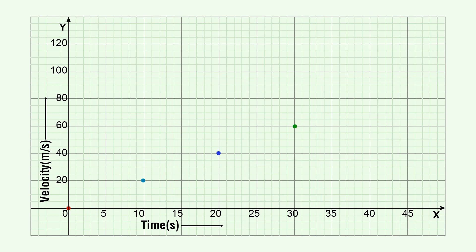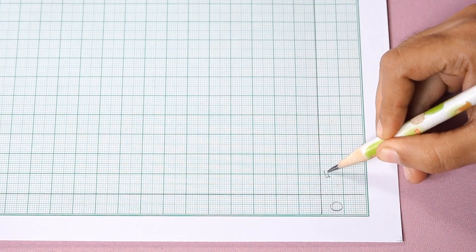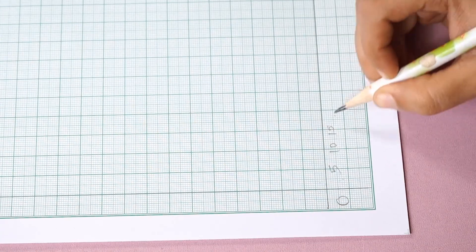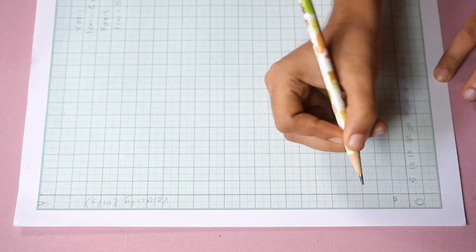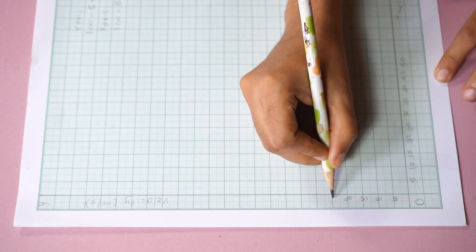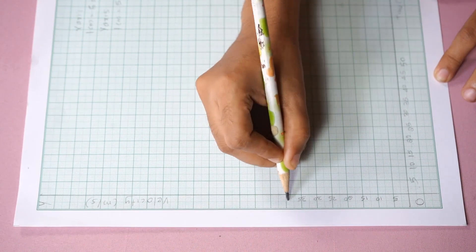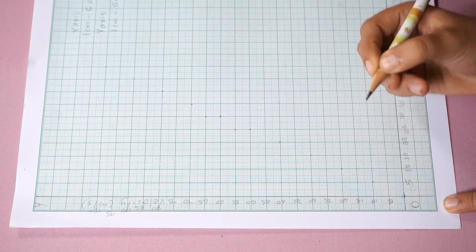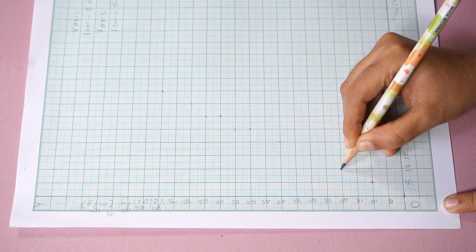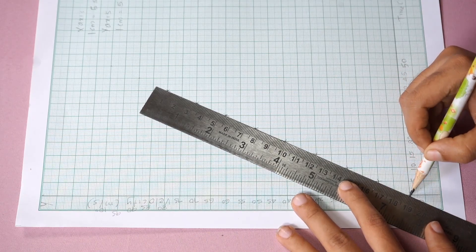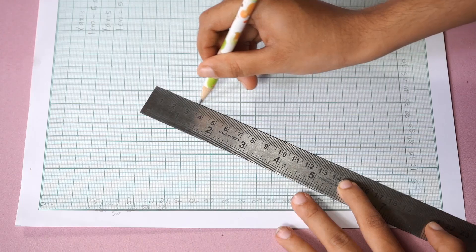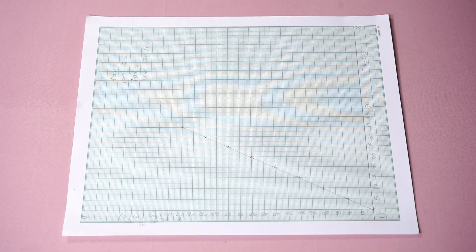According to the scale chosen, mark values for the time and velocity on the respective axes. Mark the time 5s, 10s, 15s on the x-axis at every centimeter from the origin O. Similarly, mark the velocity on the y-axis. Mark the points on the graph paper to represent each set of values for time and the corresponding velocity given in the data. Join all the marked points to obtain the VT graph for the motion of the car. Check if this graph is a straight line — a straight line graph indicates that the car is moving with a constant acceleration.